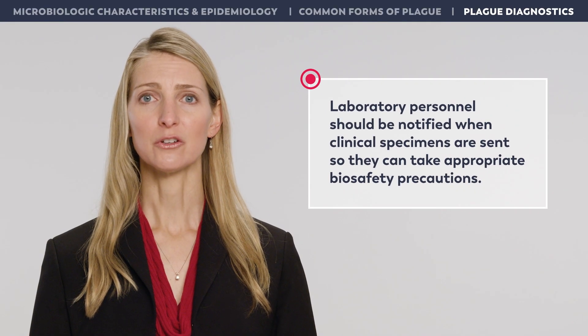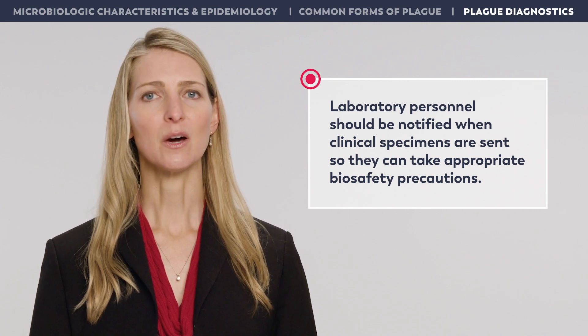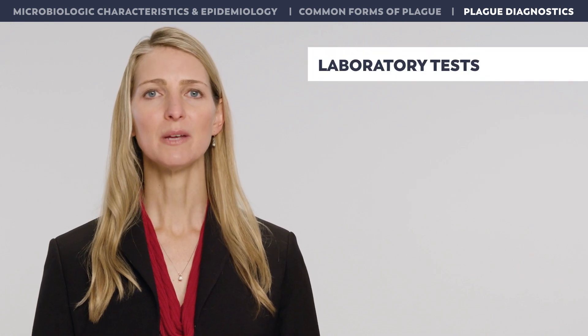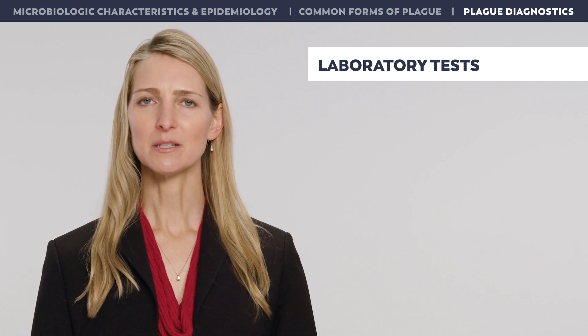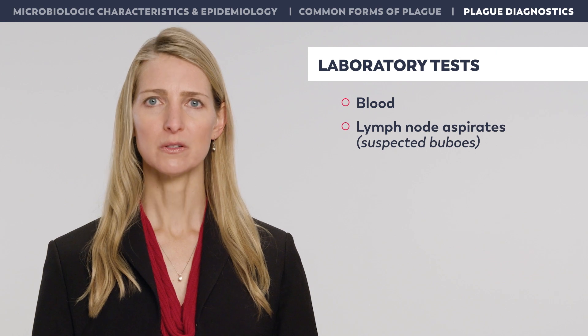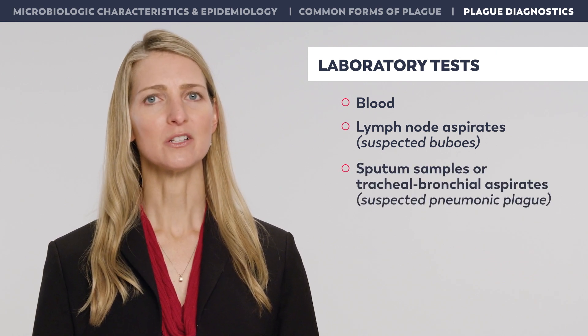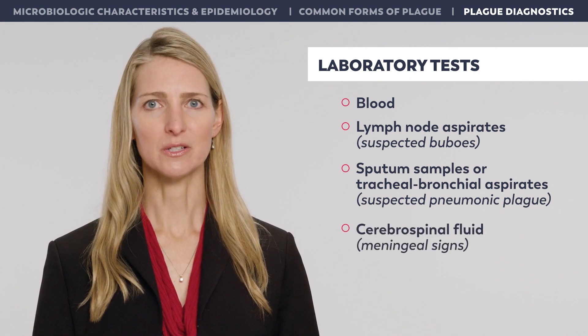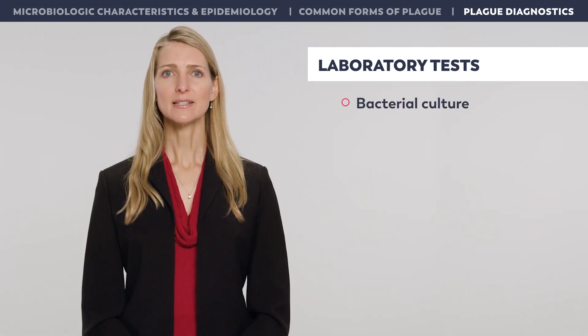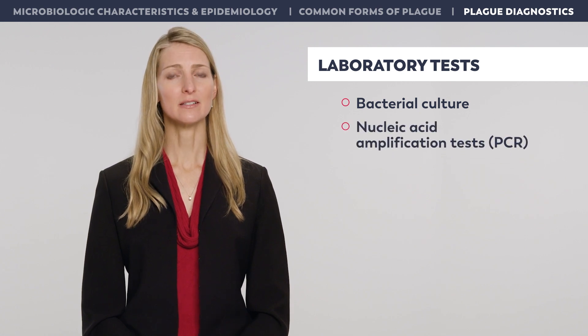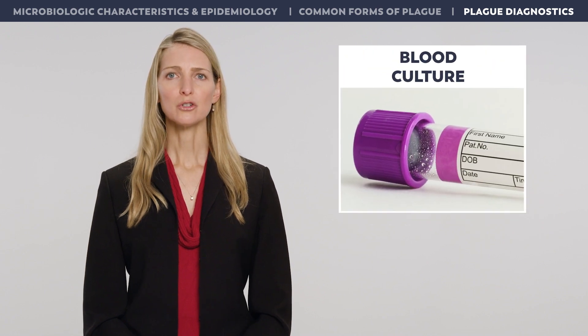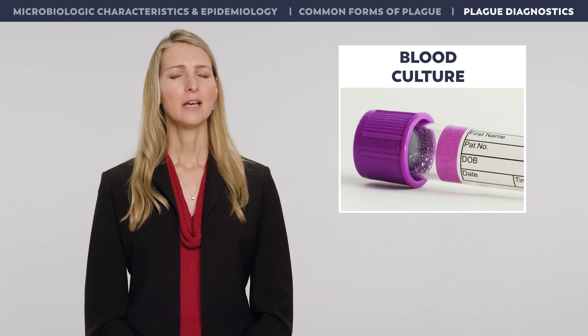If plague is suspected, laboratory personnel should be notified when clinical specimens are sent so they can take appropriate biosafety precautions. Laboratory specimens should be obtained promptly. Appropriate diagnostic specimens include blood, lymph node aspirates from patients with suspected buboes, sputum samples or tracheobronchial aspirates in patients with suspected pneumonic plague, and cerebrospinal fluid in those with meningeal signs. Bacterial culture of blood, CSF, sputum, or bubo aspirates, and nucleic acid amplification tests such as PCR are the most accurate tests. If a lymph node aspirate is obtained, a small amount of sterile saline can be injected into the bubo prior to aspiration.